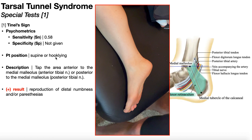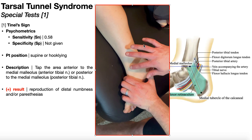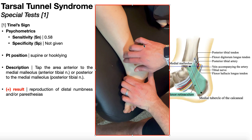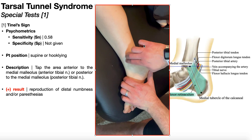The patient is going to be positioned in supine or hook-lying. Here the patient is in supine, with her entire right lower extremity externally rotated to expose the medial aspect of the ankle where the tarsal tunnel is. To perform this test, first identify the medial malleolus, then repetitively tap anterior to it. This targets the anterior tibial nerve, which is a minor branch of the tibial nerve.